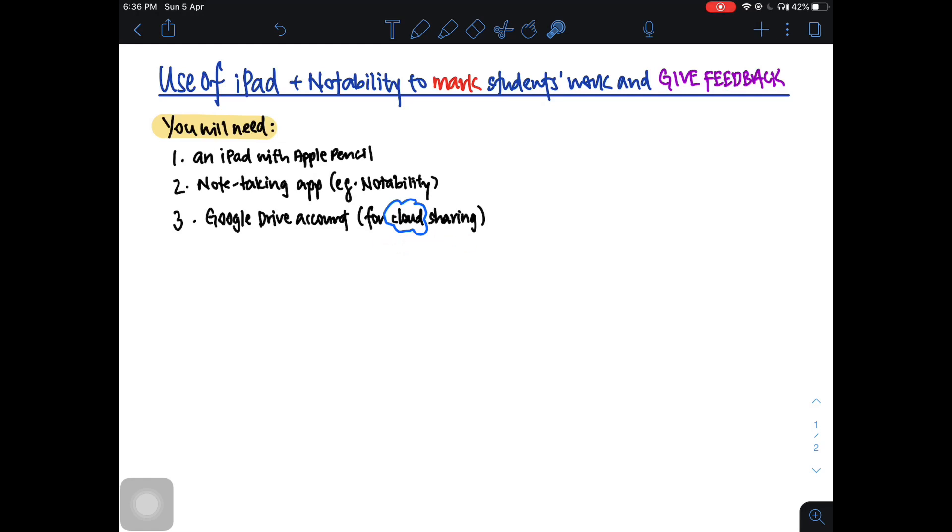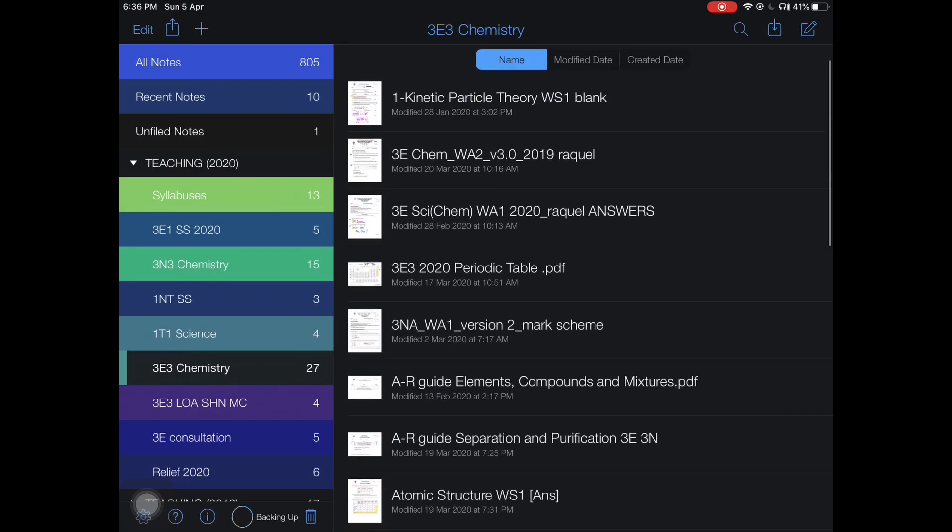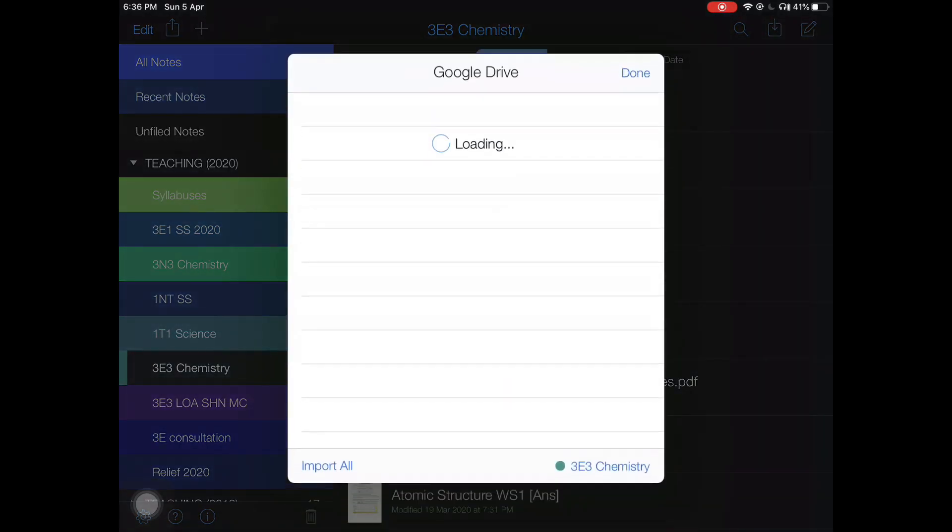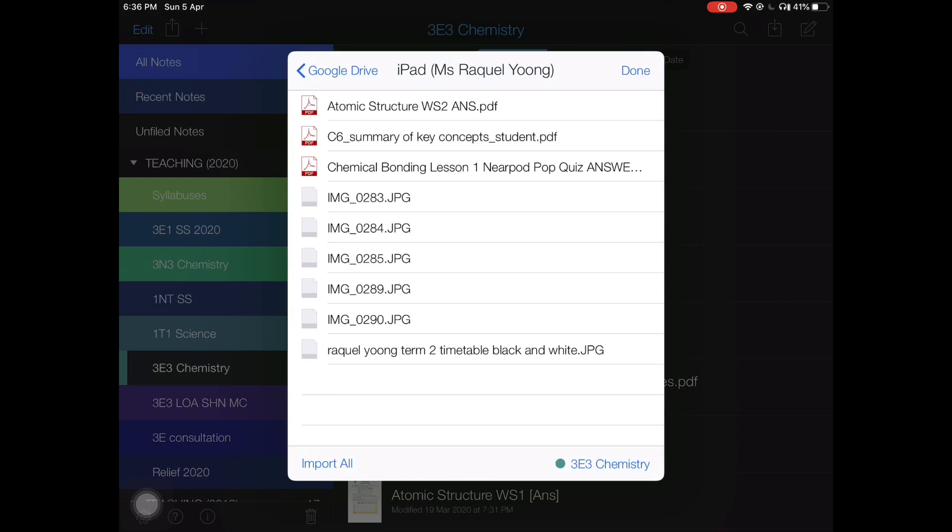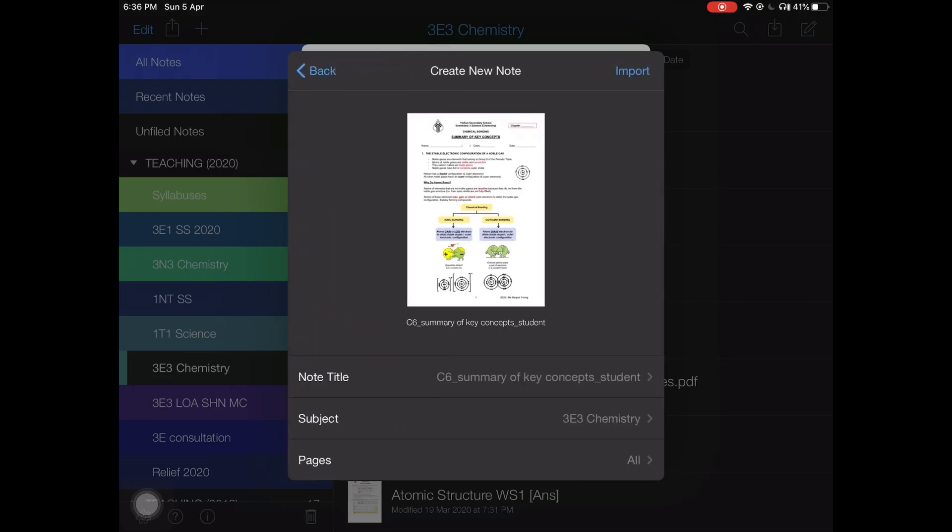Let me demonstrate an example. For 3E3 Chemistry, what I can do using the Notability app is click this and go to my Google Drive, which I have linked to this app already, go to the specific folder, and import whatever document I want. For instance, I'm going to import this.